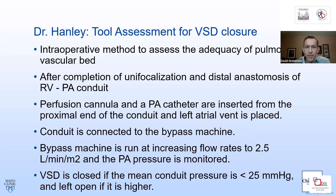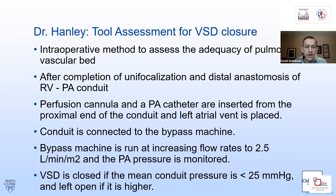Dr. Hanley had an intraoperative method to assess pulmonary blood flow. After completion of the unifocalization and the distal anastomosis of the RV-to-PA conduit, a perfusion cannula and PA catheter are inserted into the proximal end with a left atrial vent. The conduit is connected to the bypass machine, which is run at increasing flow rates to 2.5 liters per minute per meter squared, and pulmonary artery pressure is monitored. VSD closure is performed if the mean conduit pressure is less than 25 mmHg; if pressures exceed 25 mmHg at that flow rate, the VSD is left open to be closed at a later date.